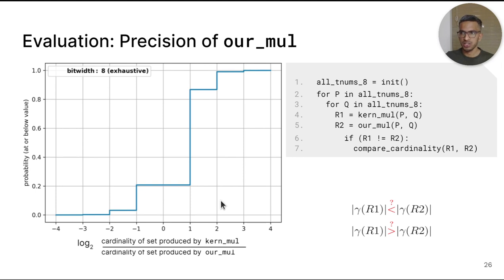The x-axis is the ratio of the cardinalities of TNUMs produced by Kernel to our_mul. We use a log-base-2 plot because the cardinalities are always powers of 2. The data to the right of 0 in the figure is the case where our_mul produced a TNUM that is smaller than kern_mul after concretization. Hence, from the figure around 80% of the cases, our_mul is more precise than kern_mul. Owing to the precision and efficiency benefits and our analytical proof of soundness which we present in the paper, we were able to merge our implementation into the Linux kernel.